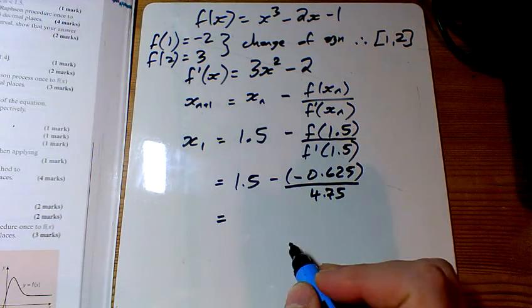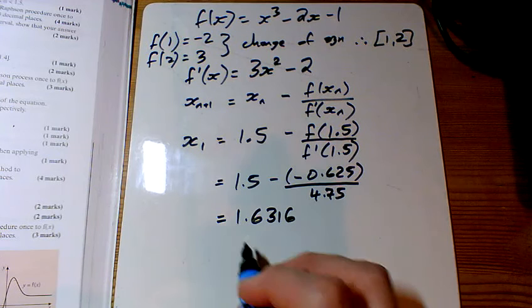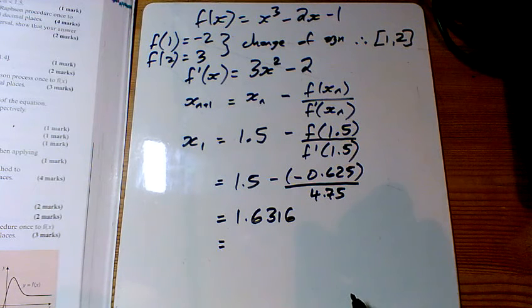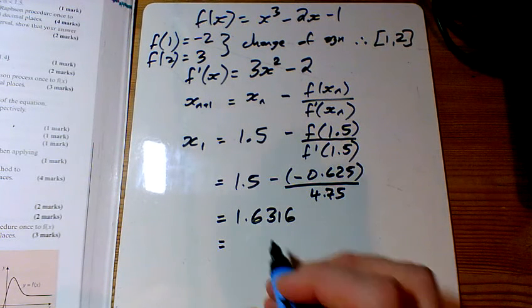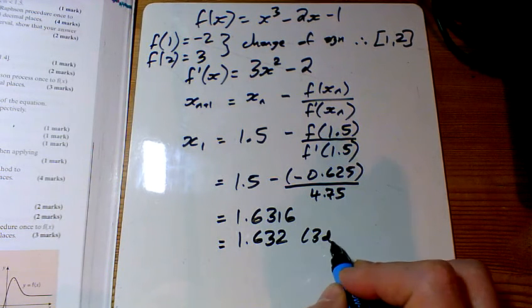So I'm just going to tap this into the calculator and get 1.6316. I've got to round it, yes, so three decimal places: 1.632 to three decimal places.